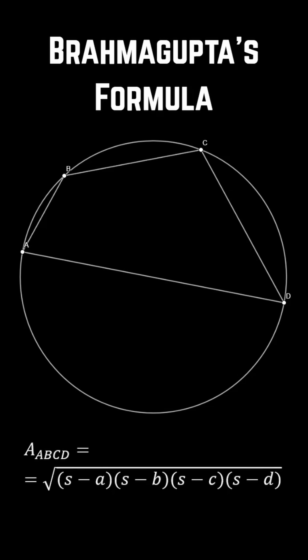In the 7th century, renowned Indian mathematician Brahmagupta discovered a beautiful expression for the area of any quadrilateral in a circle: the square root of the product of half the perimeter of the quadrilateral minus each of its sides. But why does this work?